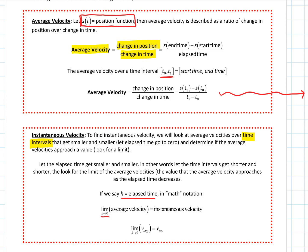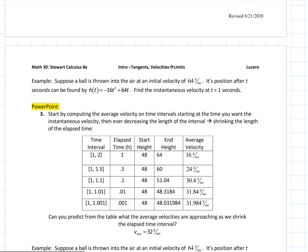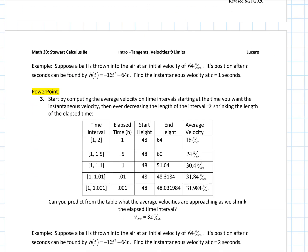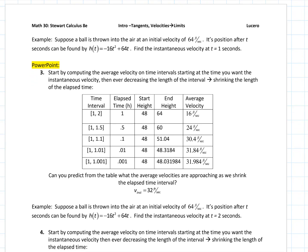Let's look at an example. I have the table filled in already — I'll show you how I filled it in, but I did that to save time so you don't have to see all the calculations; we'll do the first couple. Let's suppose we take a ball, throw it up into the air with an initial velocity of 64 feet per second. Its position after T seconds is given by this function — this is actually physics. Here, T is time and H of T is the height of the ball after T seconds.